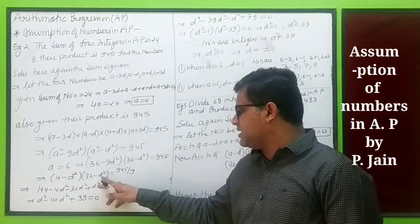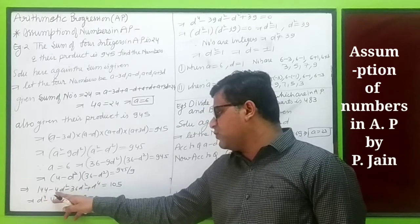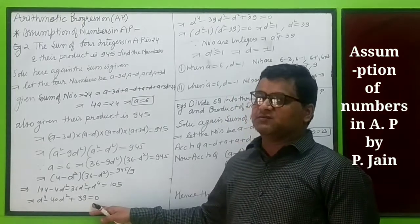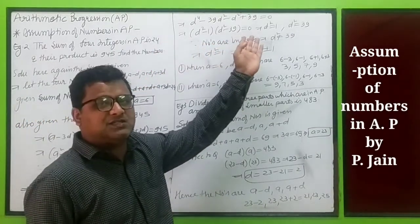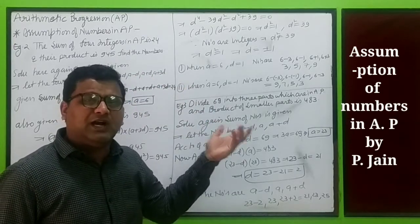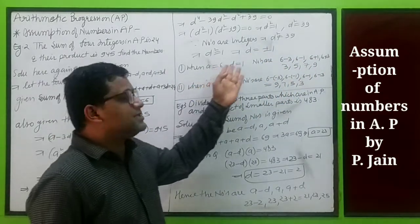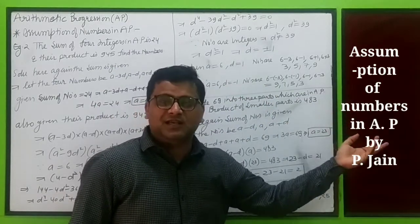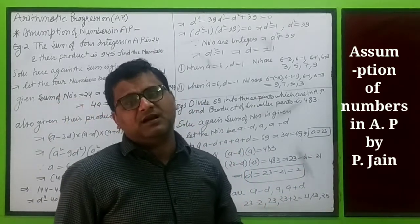Simplifying we get (4 minus d squared)(36 minus d squared) equals 105. Opening the brackets: 144 minus 4d squared minus 36d squared plus d to the power 4 equals 105. This gives d to the power 4 minus 40d squared plus 39 equals 0. Factoring: (d squared minus 1)(d squared minus 39) equals 0. So d squared equals 1, meaning d equals plus or minus 1. When d is plus 1, the numbers are in increasing form. When d is minus 1, the numbers are in decreasing form.